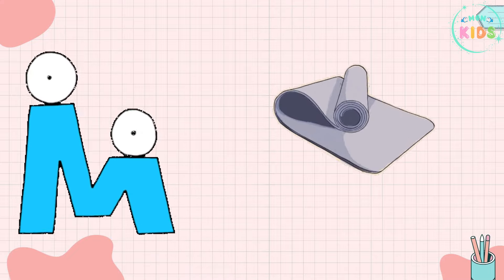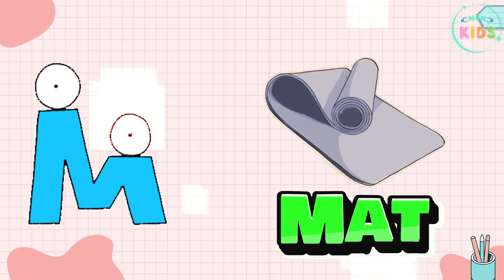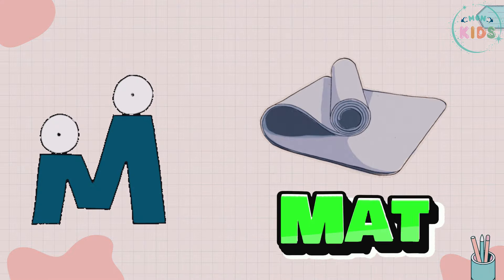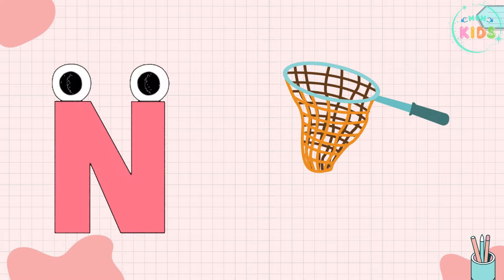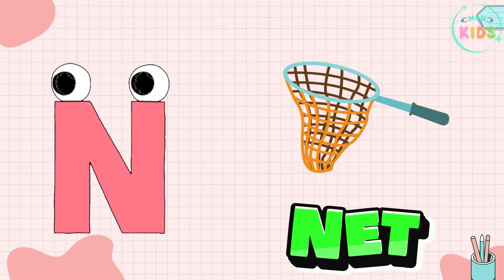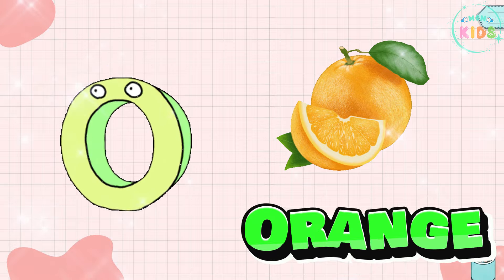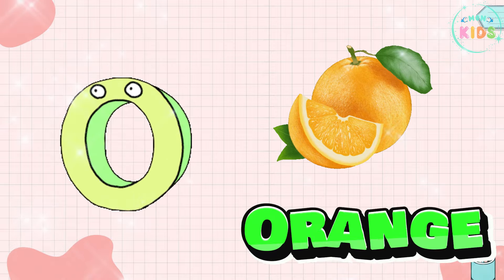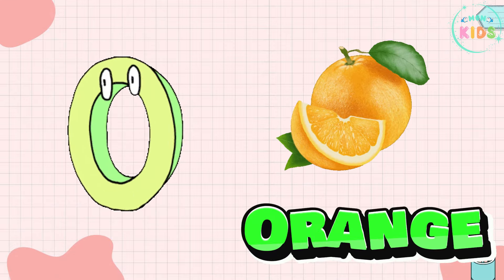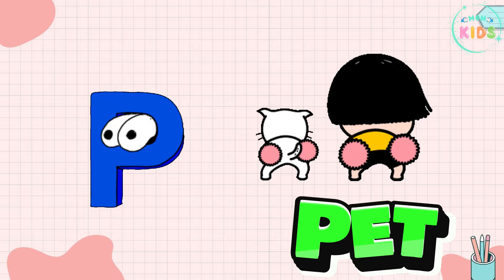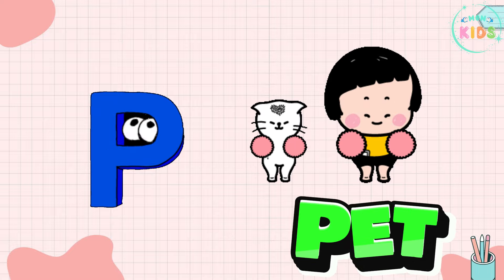M is for Mat, M-M-Mat. N is for Net, N-N-Net. O is for Orange, O-O-Orange. P is for Pet, P-P-Pet.